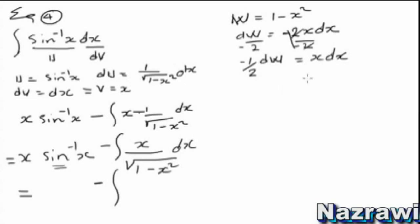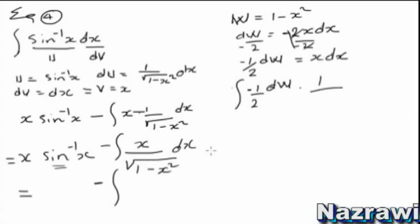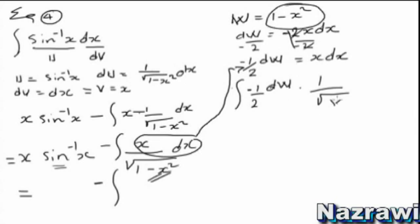Okay, so now substituting — we have the sign is negative, then positive. So now, with the substitution, we get minus — and the integral becomes one over w, times one-half dw. Equals one-half — integral of one over w dw.